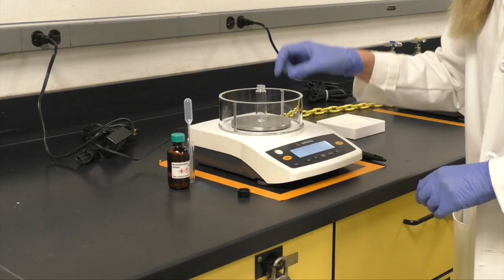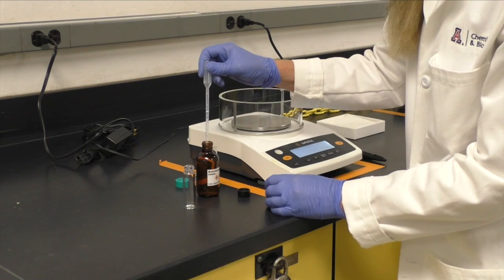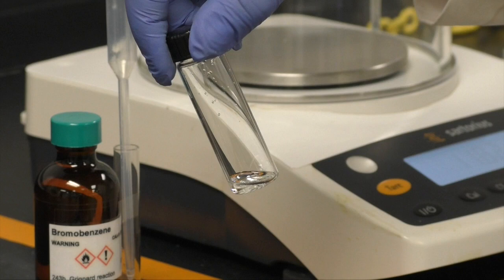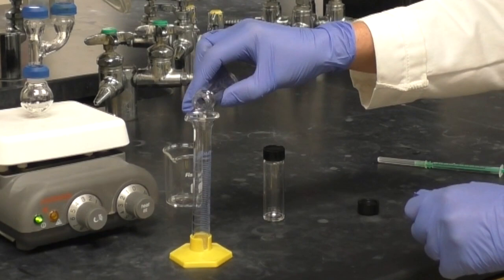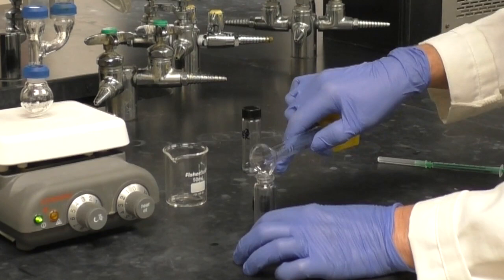Weigh out about 0.7 grams of bromobenzene, this will be about 1 milliliter, into a 4-dram vial. Add 3 milliliters of the previously obtained diethyl ether to the vial. Swirl to mix well and dissolve the bromobenzene.